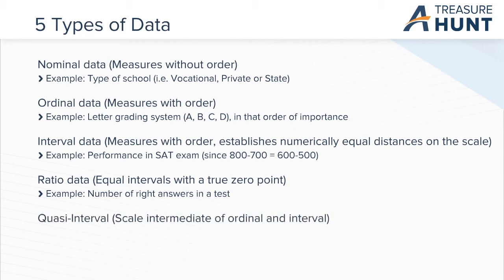Quasi-interval is a type of scaling that falls between ordinal and interval. Technically ordinal, but can be analyzed as if it were interval. A good example of quasi-interval is a Likert scale in an opinion poll of five, that is, strongly agree, to one, that is, strongly disagree.